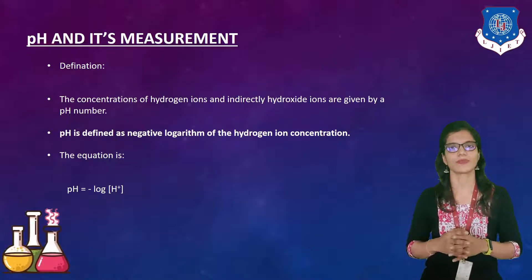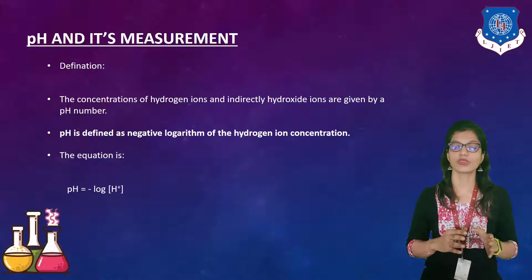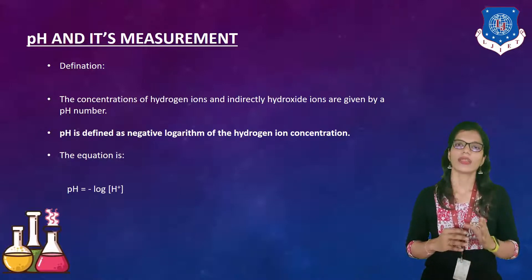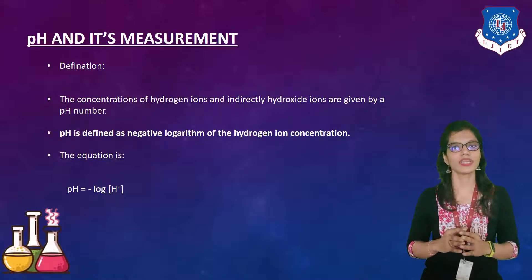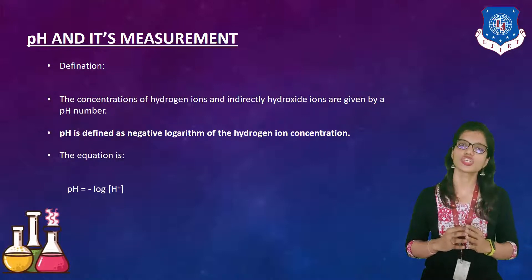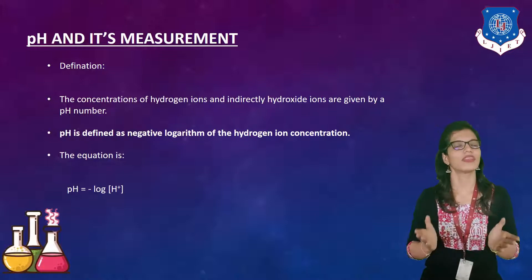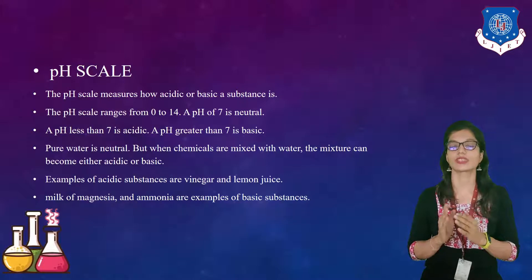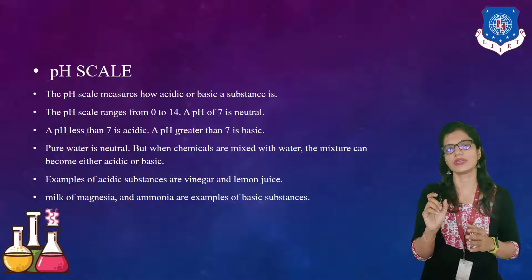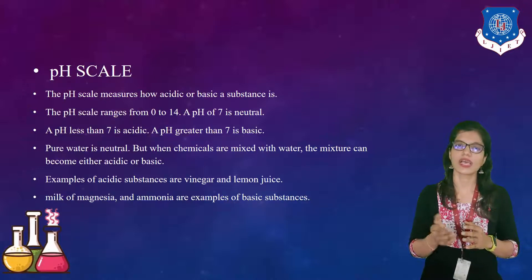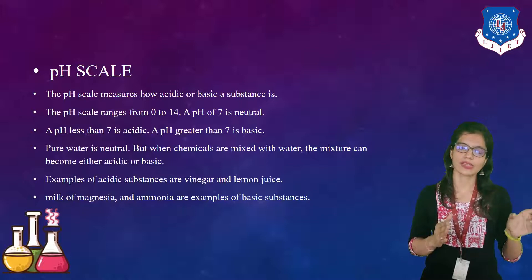Next is pH and its design. pH can be defined such that the concentrations of hydrogen ions and indirectly hydroxide ions are given by the pH number. It is defined as the negative logarithm of the hydrogen ion concentration. The equation is: pH = -log[H+]. The concentration of H+ ions gives rise to the pH value. From 0 to 6.8 is generally considered acidic pH, while 7.2 to 7.3 is considered basic pH.